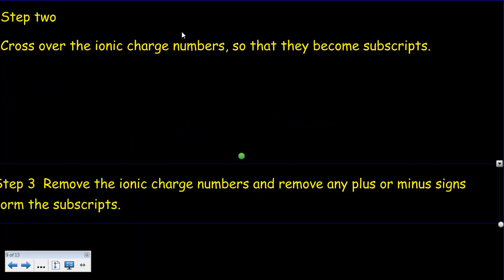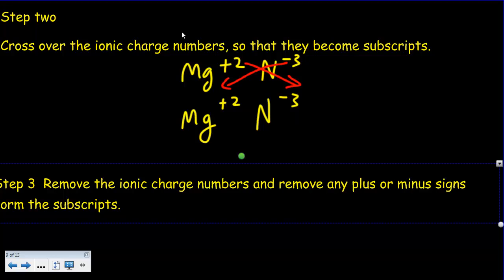Step two: cross over the ionic charge numbers so that they become subscripts. So we had Mg +2 and N -3. What we want to do now is cross those over. So bring that -3 down here and bring that +2 over here. So what we're going to end up with would be Mg subscript 3 and N subscript 2.